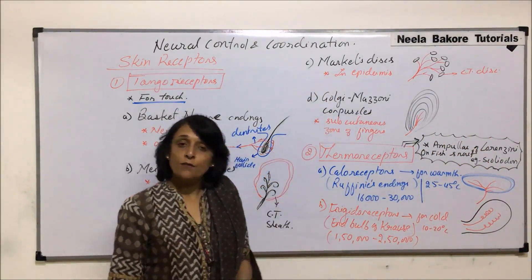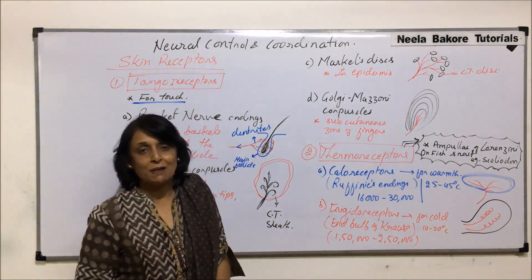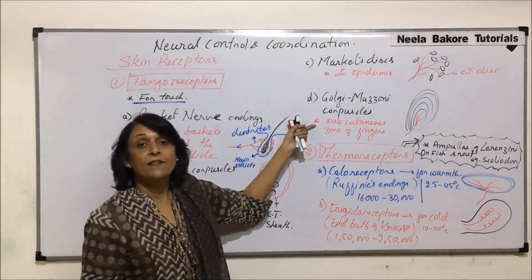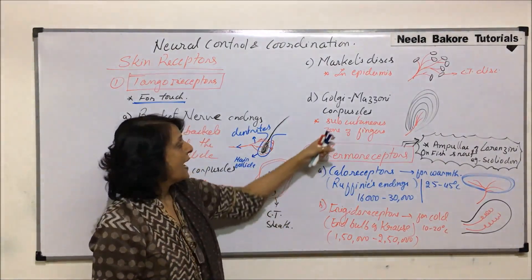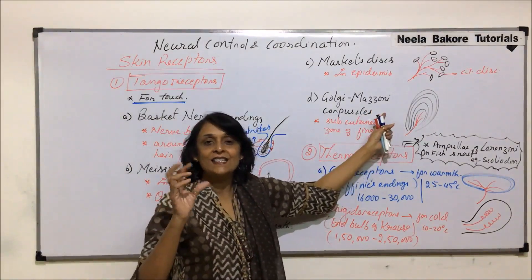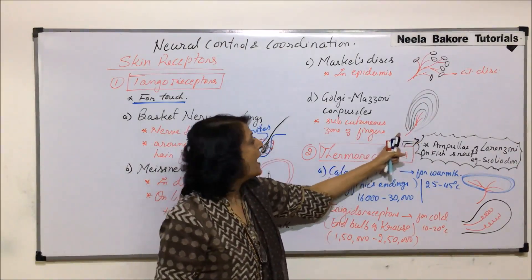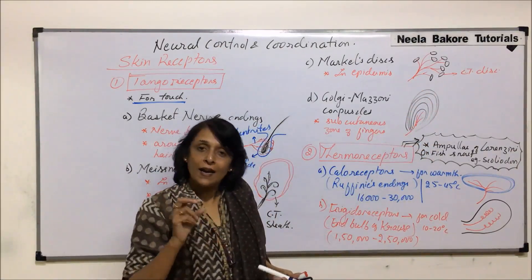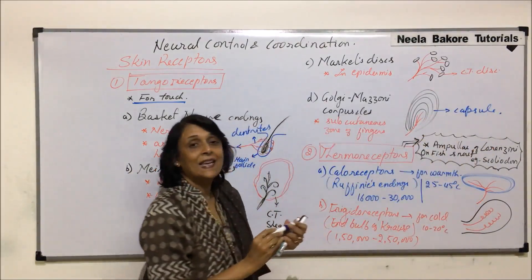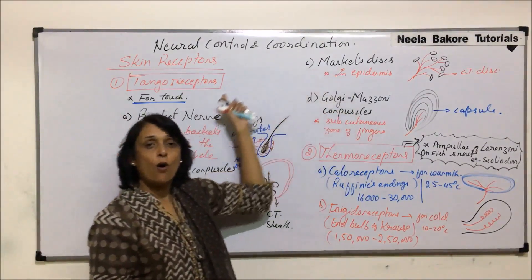The next tangoreceptors are known as Golgi-Meissner corpuscles — many times written as only Meissner's corpuscles, but Golgi-Meissner corpuscles is the more appropriate and correct name. They are found subcutaneously, meaning just under the skin, especially in the zone of fingers, which is how we detect any kind of touch very easily there. Here again there is a nerve dendrite, and in this case we have a capsule made up of many layers of connective tissue sheath — in a capsule we have multiple layers, whereas a sheath is normally one or two layers.